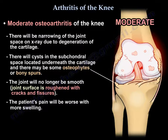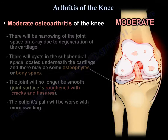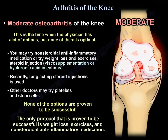In moderate arthritis, X-rays will show narrowing of the joint space due to cartilage degeneration. There will be cysts in the subchondral space located underneath the cartilage, and there may be osteophytes — bone spurs. The joint surface will no longer be smooth but roughened with cracks and fissures, and the patient's pain will be worse with more swelling.